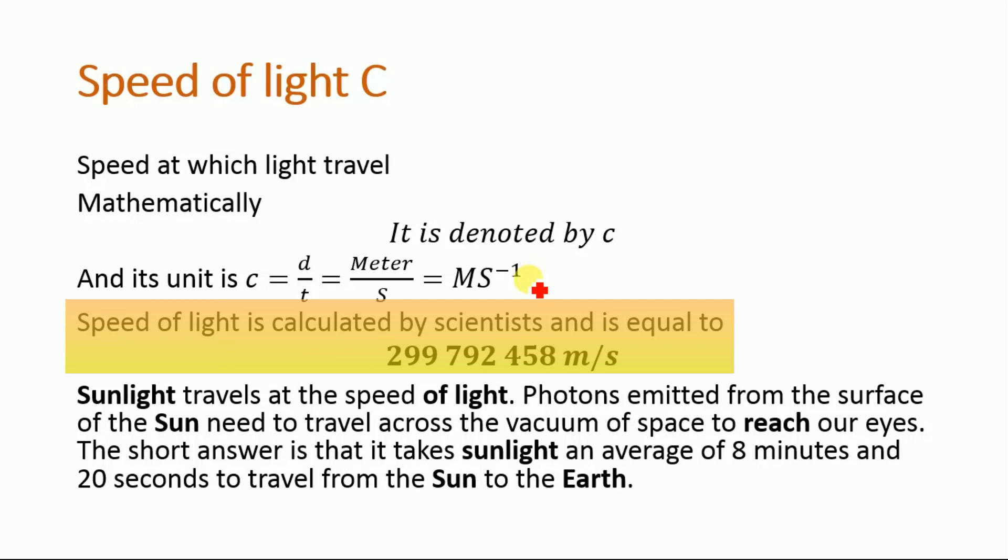The speed of light is defined and is calculated by scientists which is equal to 299,792,458 meters per second.